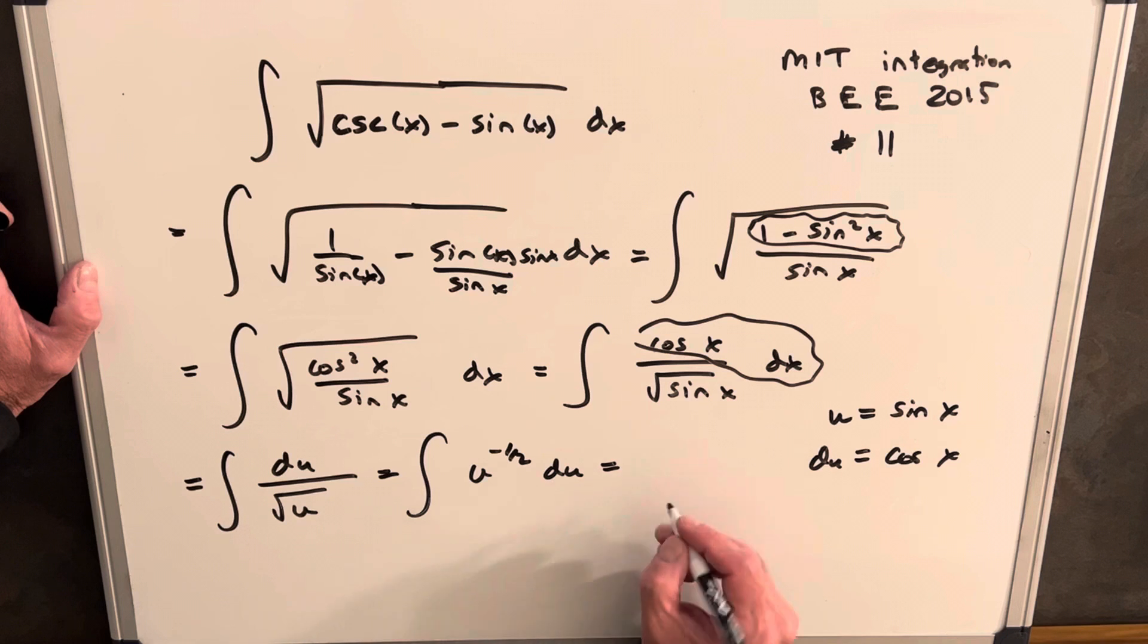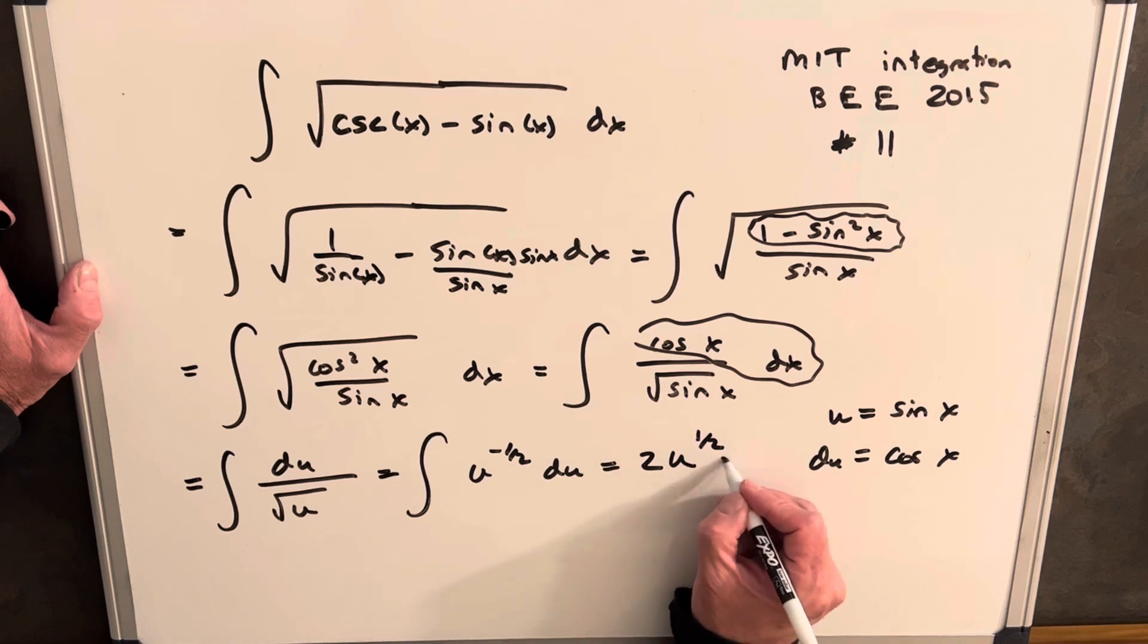Then we integrate using the power rule. We'll have u to the 1 half, divided by 1 half, is 2 plus c.